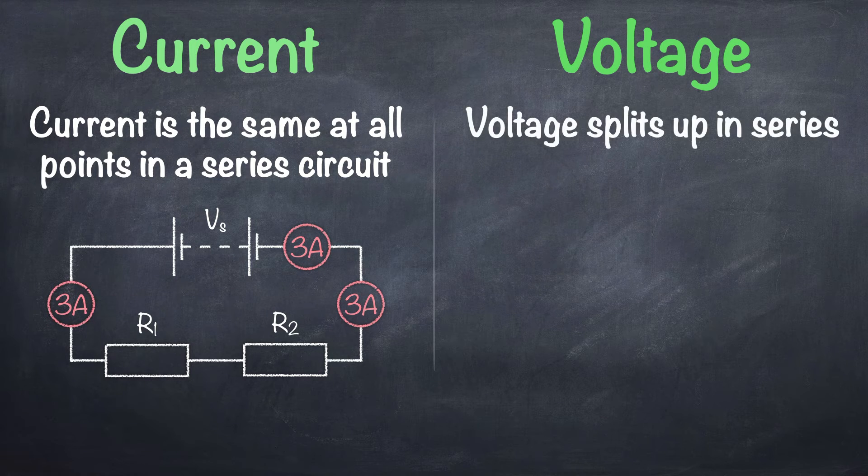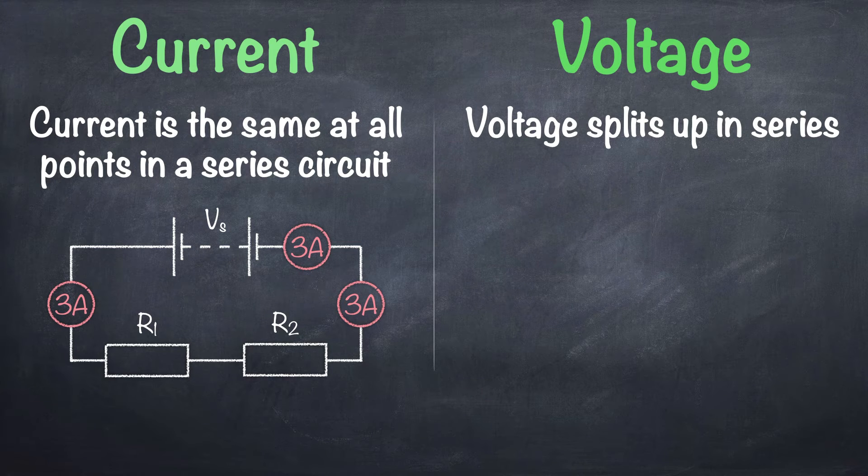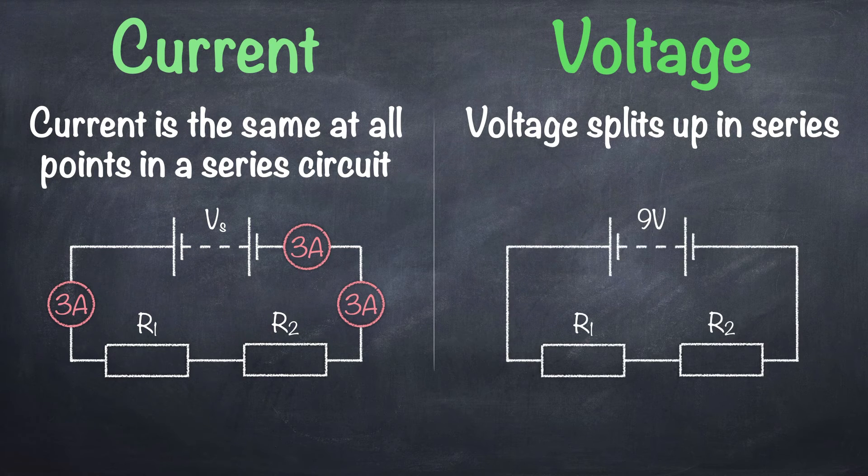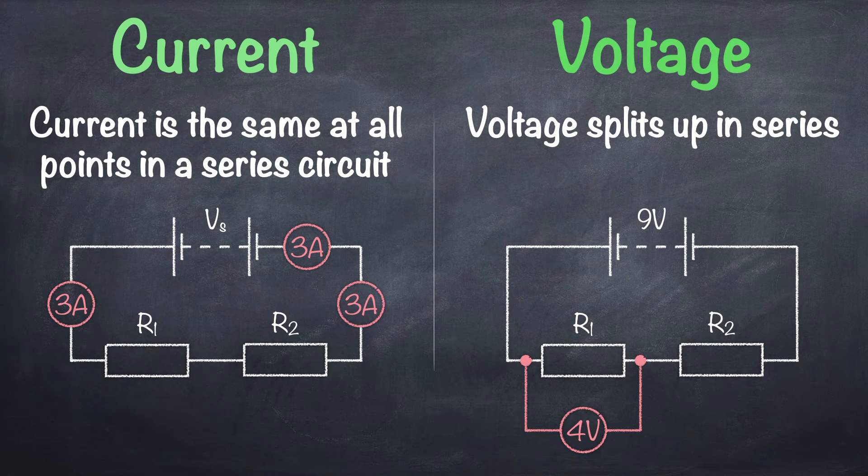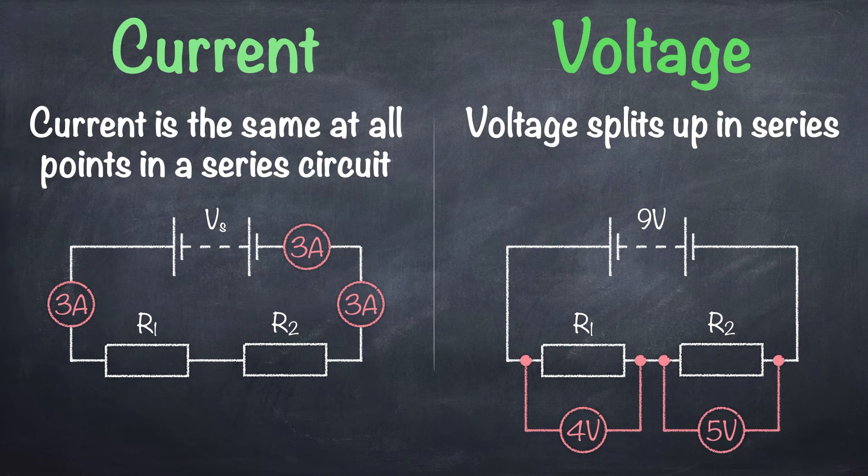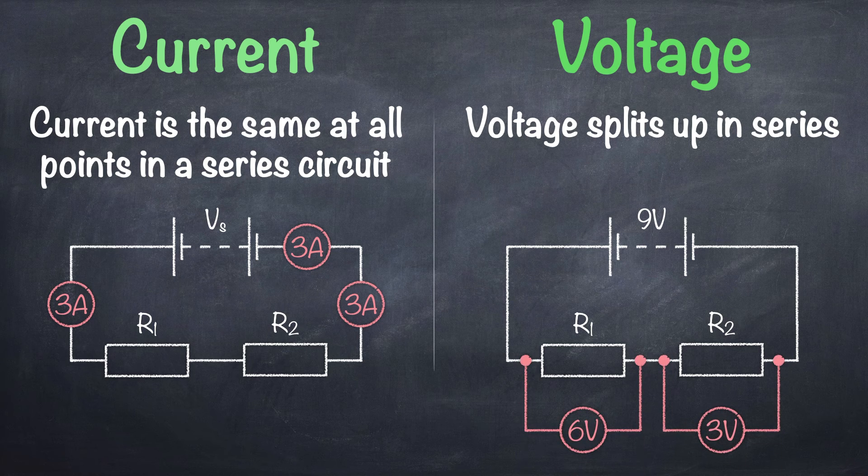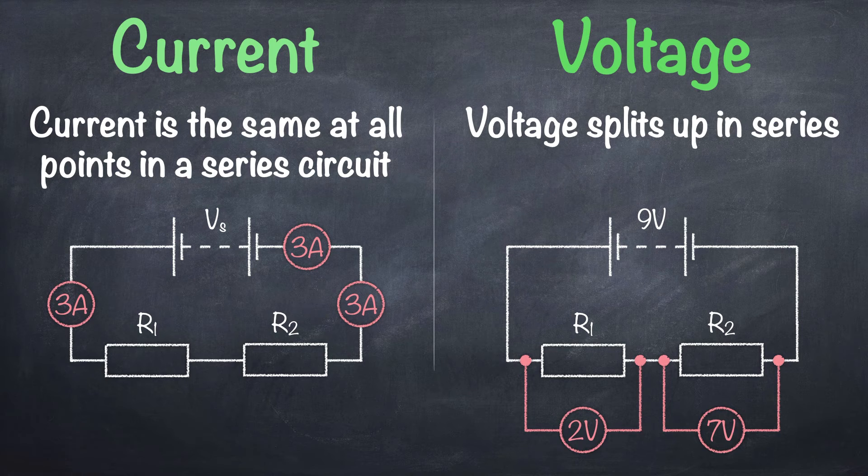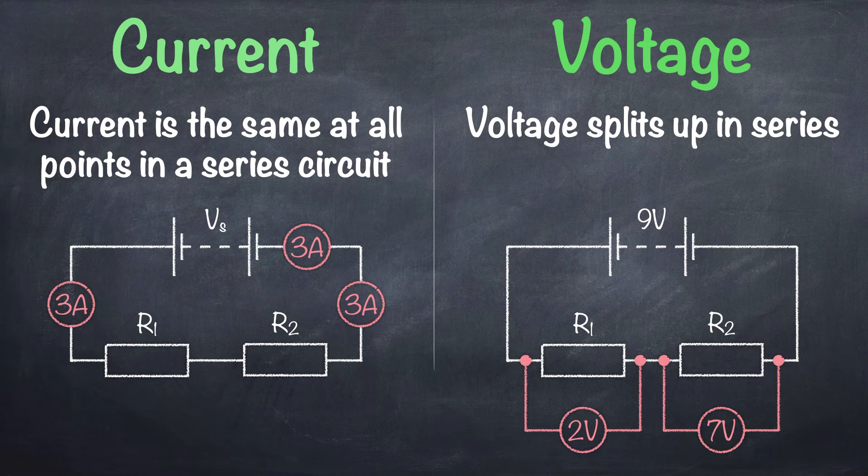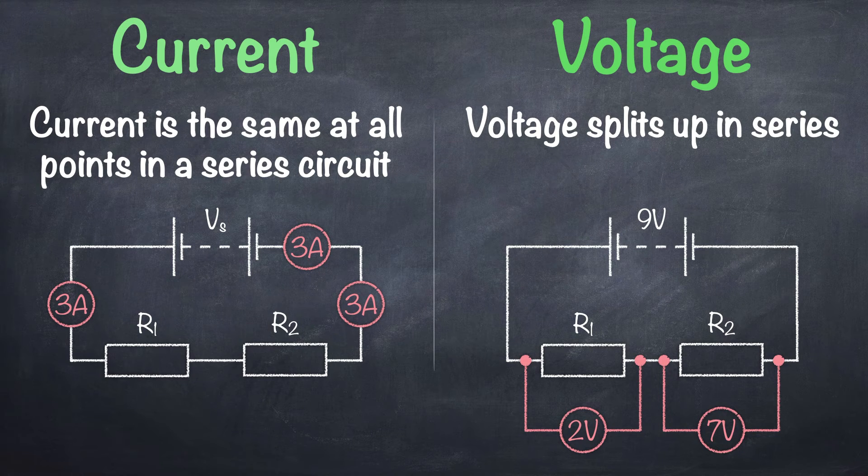Voltage in a series circuit splits up. Let's say the supply voltage in this circuit is 9 volts. We might then measure 4 volts across one resistor and 5 volts across the other. Or 6 volts and 3 volts. Or 2 volts and 7 volts. The important thing here is that the two voltages add up to the supply voltage. For more information on this type of circuit just look up one of my videos on voltage dividers.